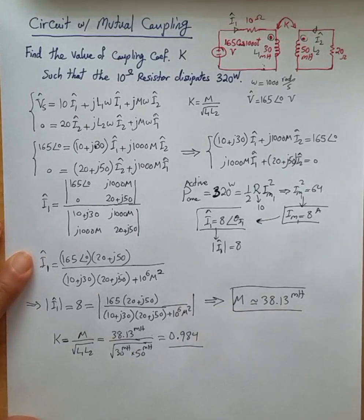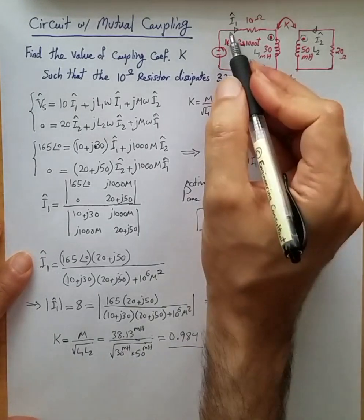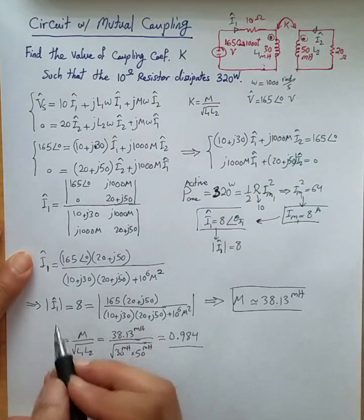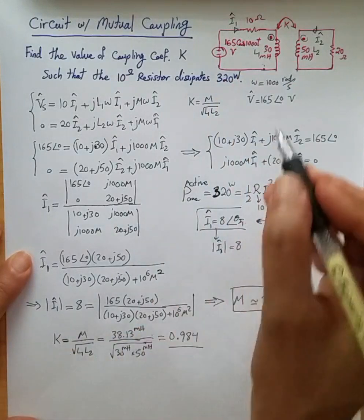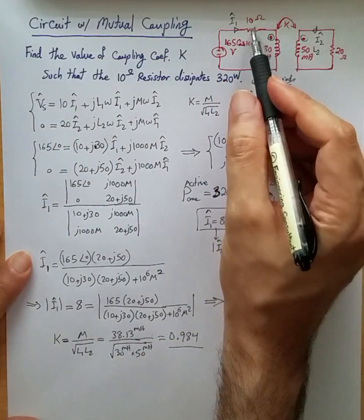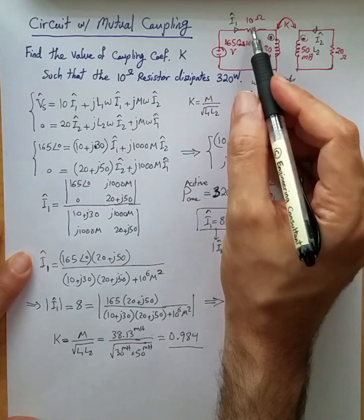With this coupling coefficient, the resulting I1 will have a magnitude of 8 or amplitude of 8, and then that would result in an average power dissipation of 320 watts across this 10 ohm resistor.